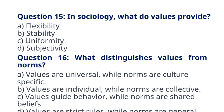Question 16. What distinguishes values from norms? A. Values are universal, while norms are culture-specific. B. Values are individual, while norms are collective. C. Values guide behavior, while norms are shared beliefs. D. Values are strict rules, while norms are general principles. The correct answer to question 16 is option C. Explanation: Values guide behavior as shared beliefs, while norms are specific rules dictating behavior.